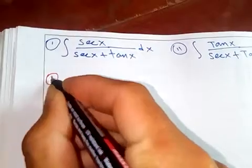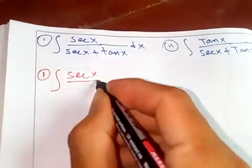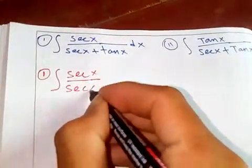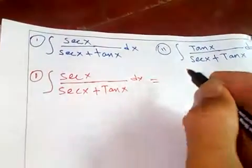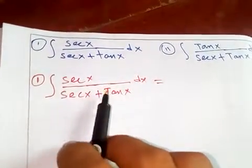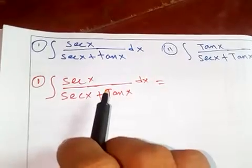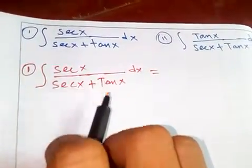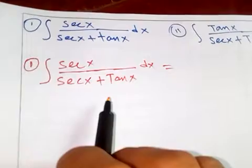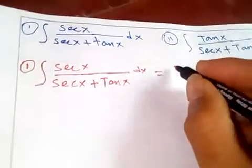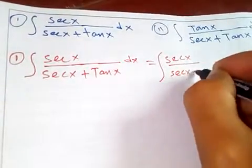Let's start with the first one: integral of sec x over sec x plus tan x dx. We cannot separate this directly, so we need to rationalize the denominator. We multiply by the conjugate form.